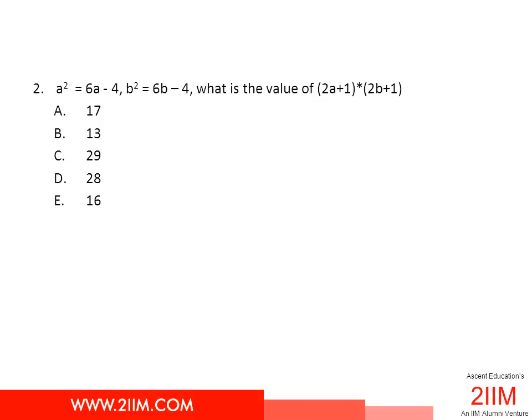a² = 6a - 4, we can simplify this as a² - 6a + 4 = 0. We see that doesn't take off anywhere. It's not an easily factorizable quadratic equation. We can't find directly the roots of this equation. What do we do then?